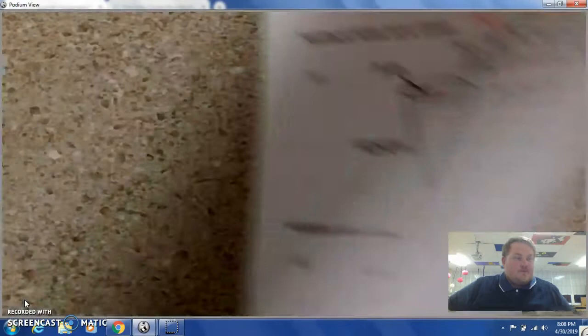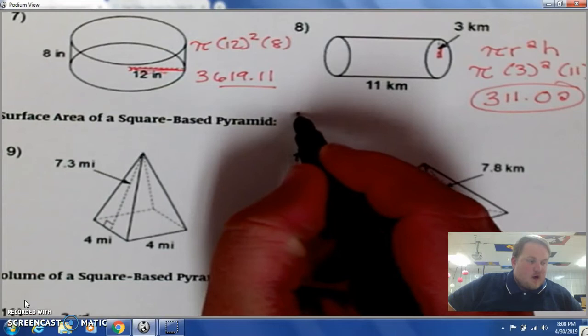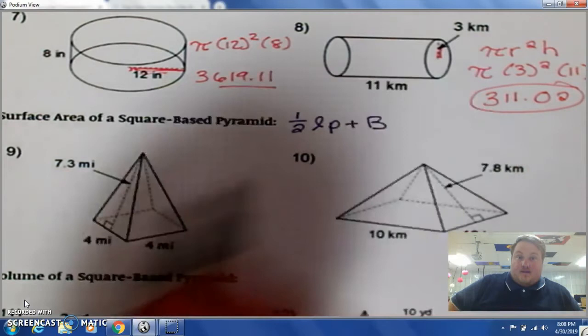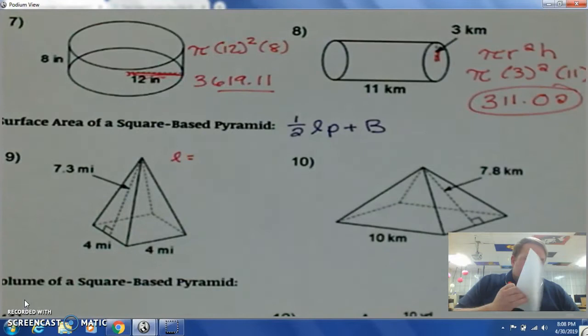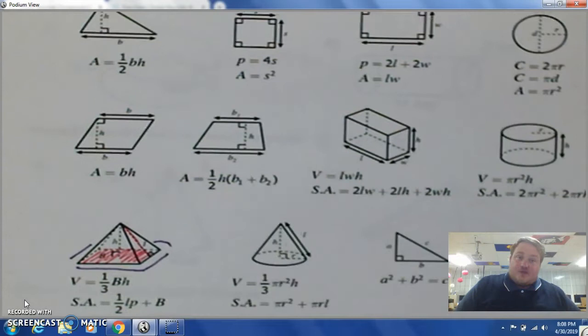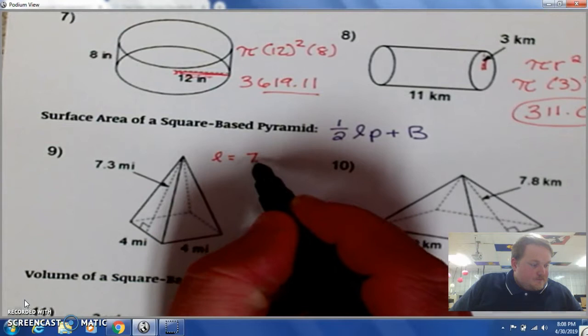The surface area of a square base pyramid is 1 half LP plus big B. Now let's start solving this. Let's first off identify what is L. In this case, L is your slant height. As you can see, it's not the up and down line, it's the line that goes alongside the triangle. So in this case, L is 7.3.